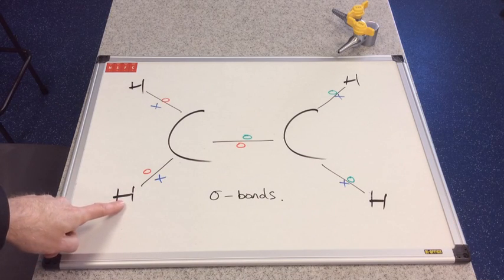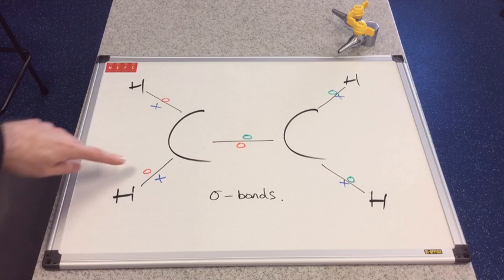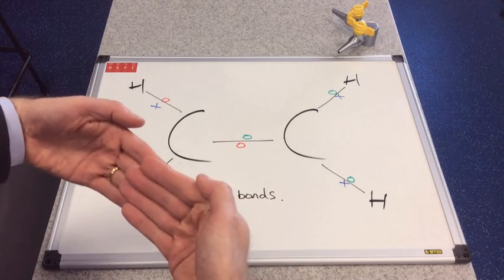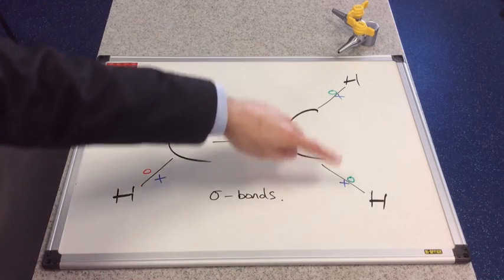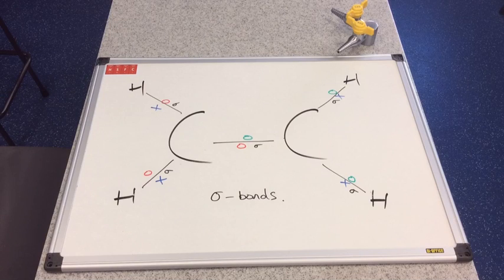So the orbital that the blue cross was in and the orbital that the red circle is in have overlapped like that. And so is that, so is that, so is that, and so is that. So you can see I've added the sigma labels to those five bonds.